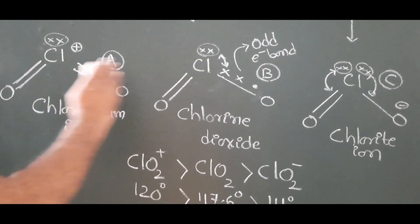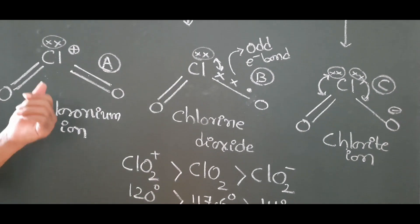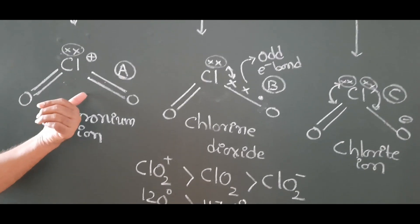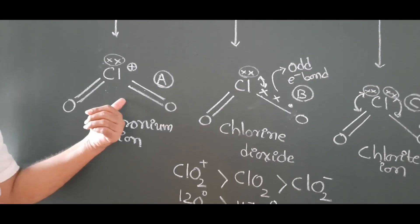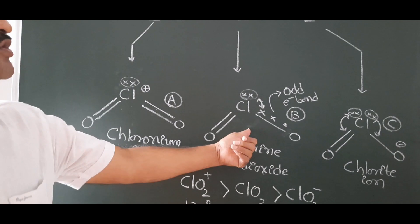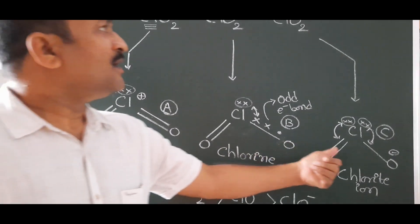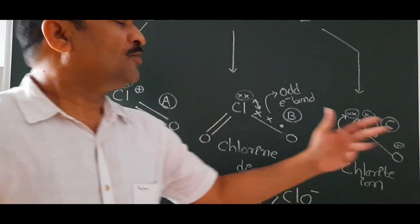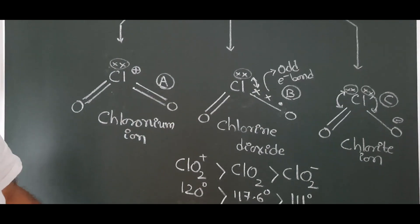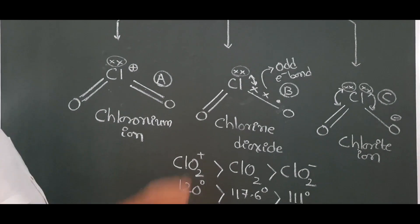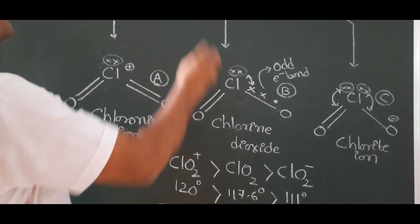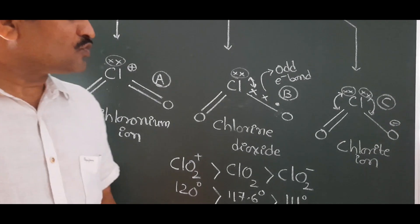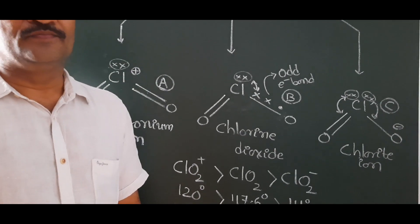So based on this concept, ClO₂⁺ has the highest bond angle, ClO₂ has a lower bond angle, and ClO₂⁻ has the lowest bond angle. This is the comparison of the bond angles of ClO₂⁺, ClO₂, and ClO₂⁻. Thank you.